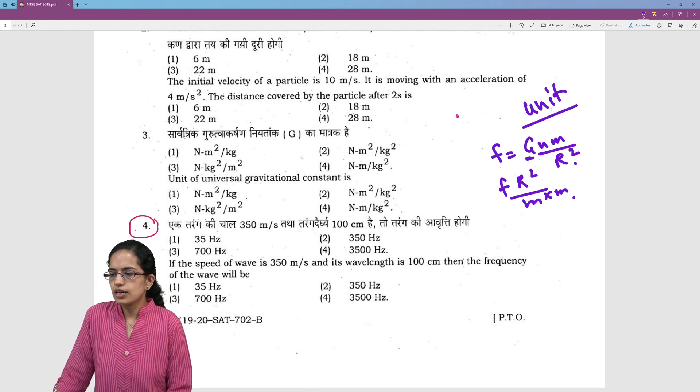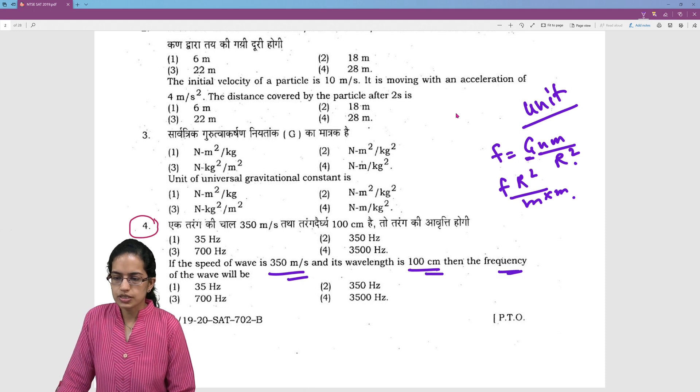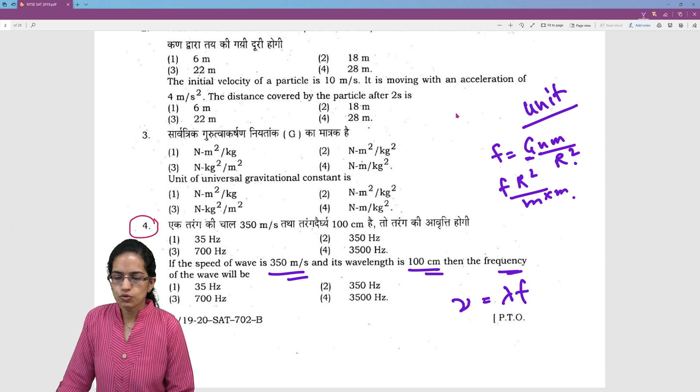The next question here - the speed is given, the wavelength is given, you have to find out the frequency. So simply velocity of a wave is equal to wavelength into frequency.